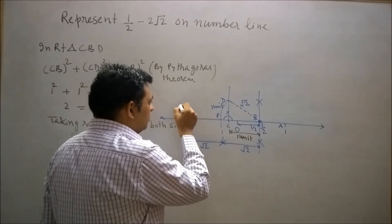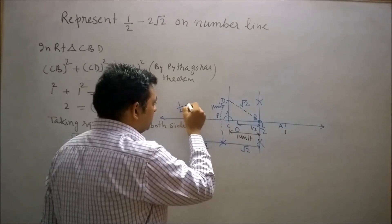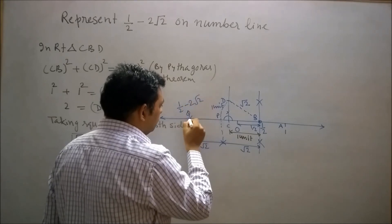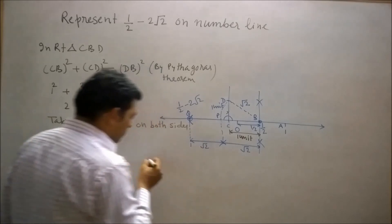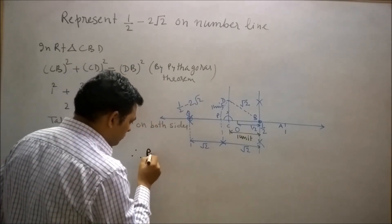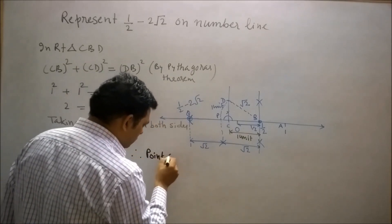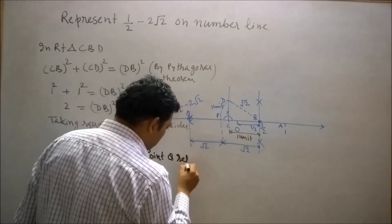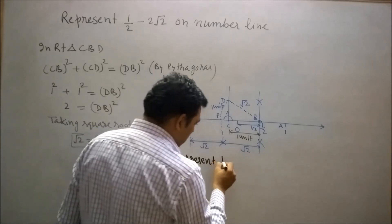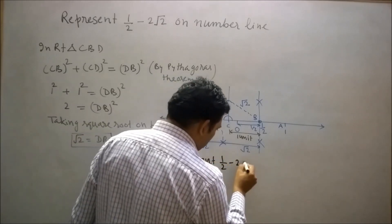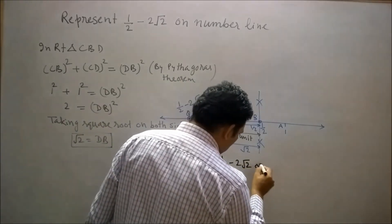So Q point represents half minus 2 root 2. Therefore point Q represents half minus 2 root 2 on number line.